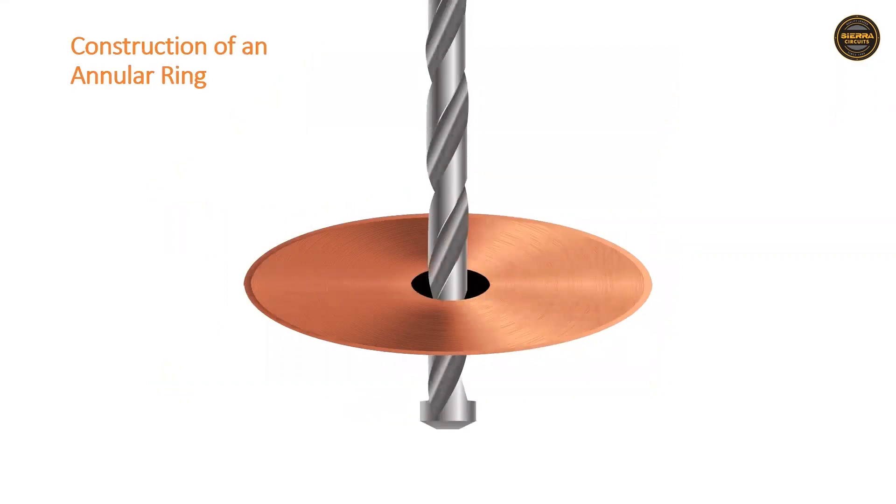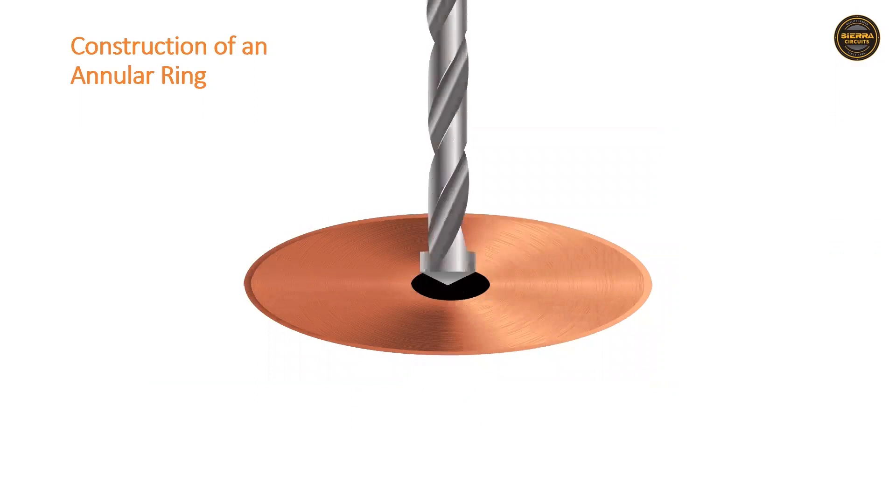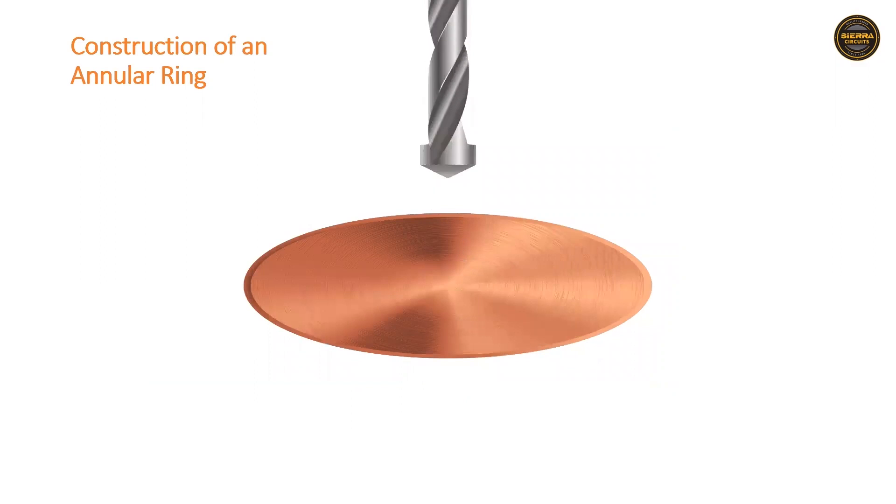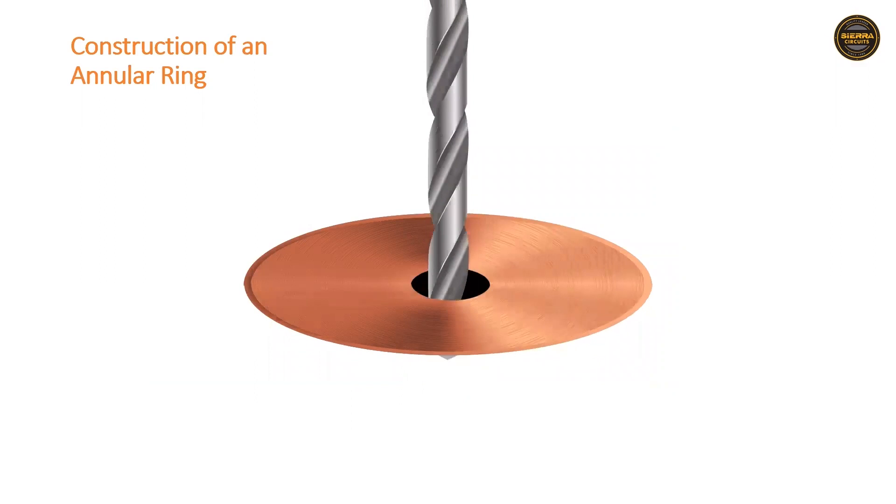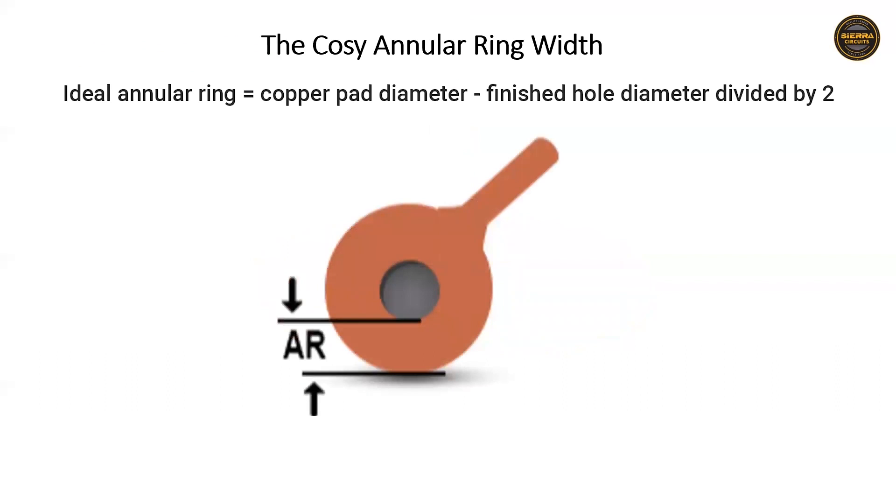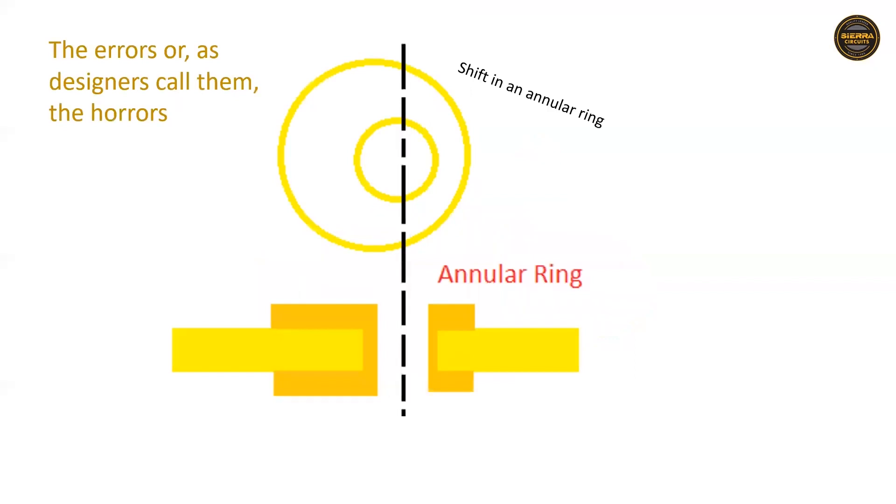During manufacturing, a via and its annular ring is created by placing a copper pad on the board and drilling a hole through it. The annular ring size can be determined after the drilling and plating processes. The perfect annular ring width is the difference between the diameter of the copper pad and the finished hole divided by two.